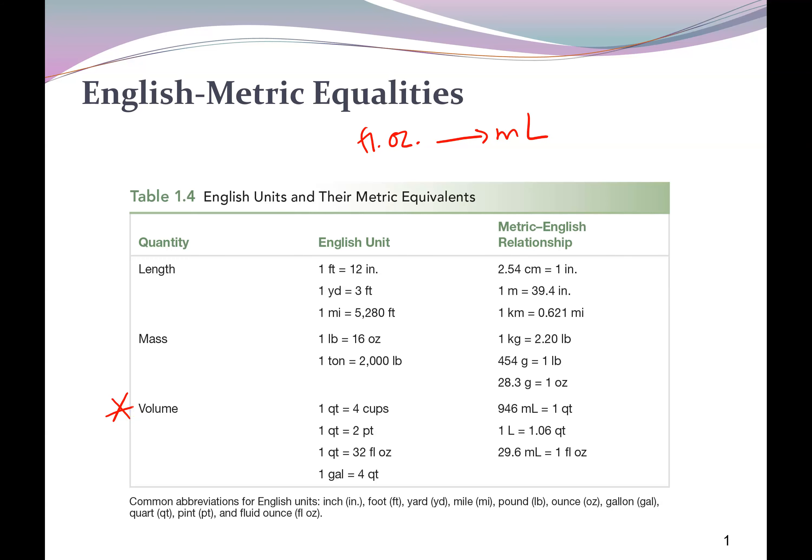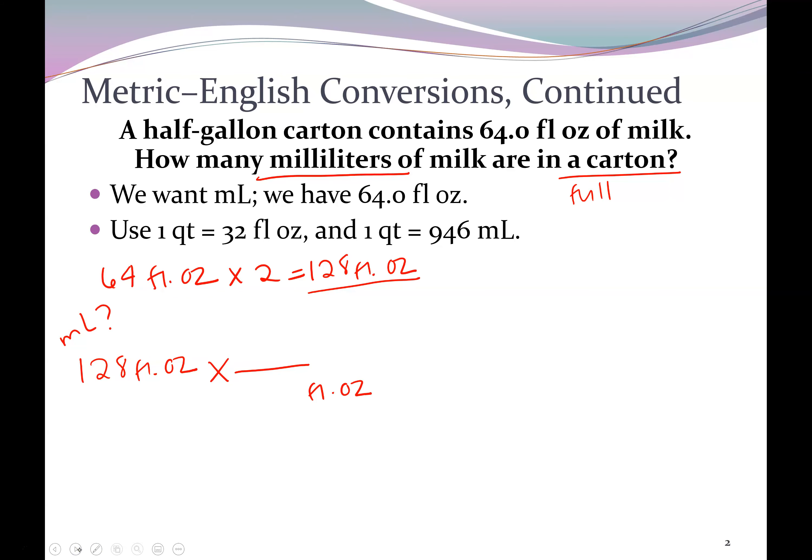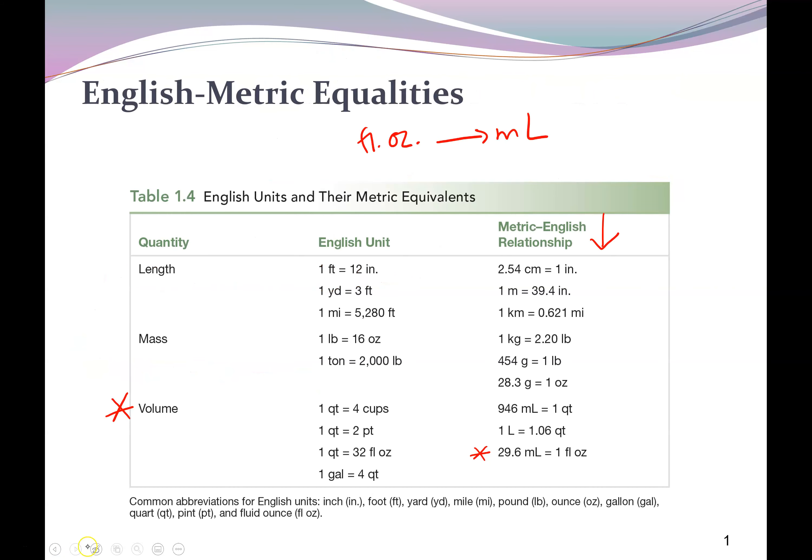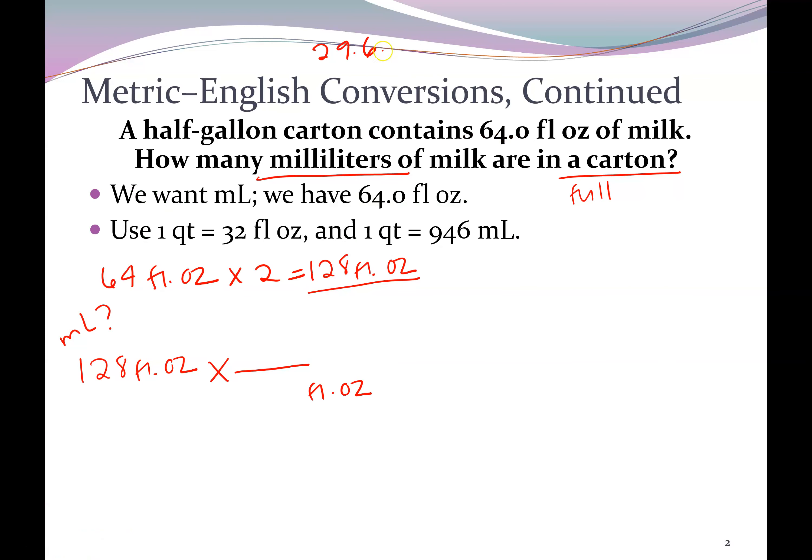Going over to the metric and English relationship column over here, we can see that we do have a direct conversion. 29.6 milliliters equals one fluid ounce. So we can convert directly to milliliters here. So in one fluid ounce, there is 29.6 milliliters.